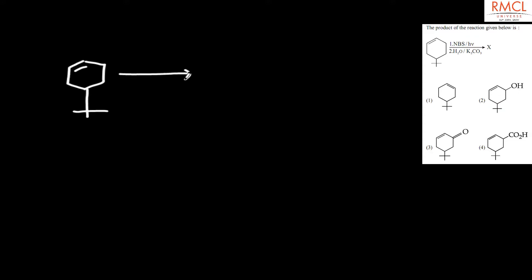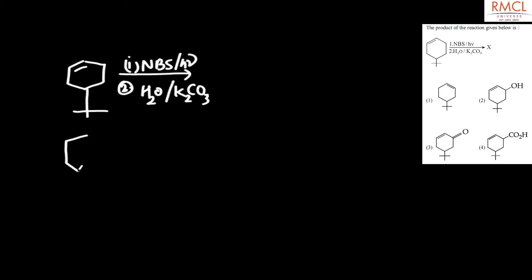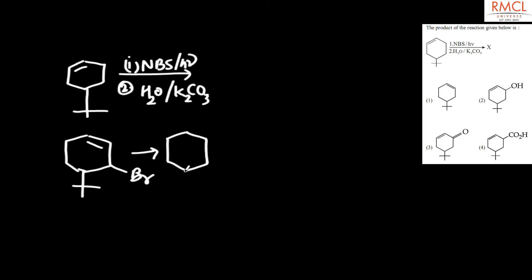The first reaction has NBS (N-bromosuccinimide) and the second reaction has H₂O and K₂CO₃. In this reaction, the PR group converts into a plus charge, and OH⁻ attaches, then it converts.